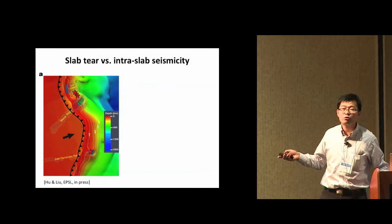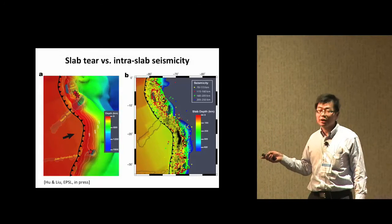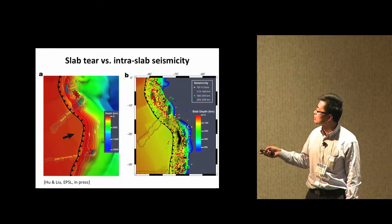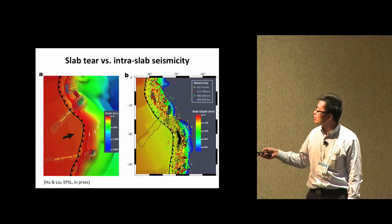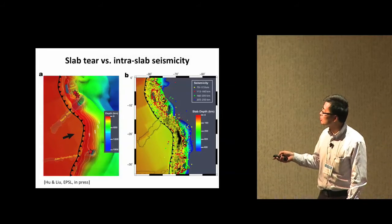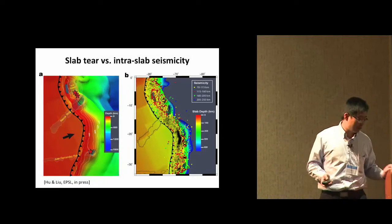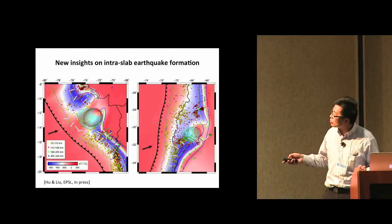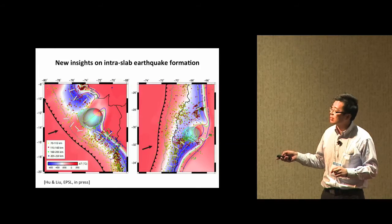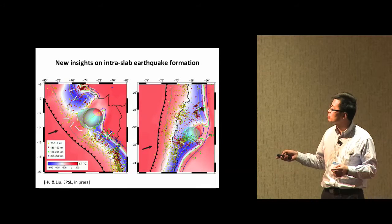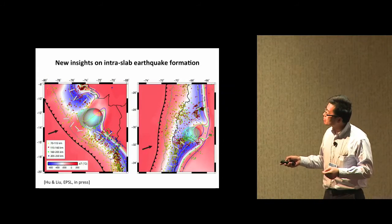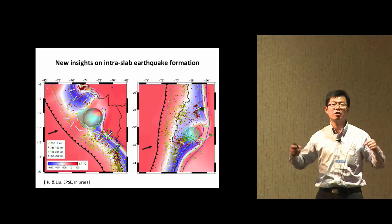Comparing with actual earthquake data, wherever we predict a slab gap there is almost an absence of earthquakes. Traditional interpolation of earthquake locations produces a continuous-looking profile, but zooming into the flat slab region, every observed earthquake in our prediction falls within the interior of our slab. This holds for all depths — for the Peruvian flat slab and the central Chile flat slab — and the match is almost perfect.